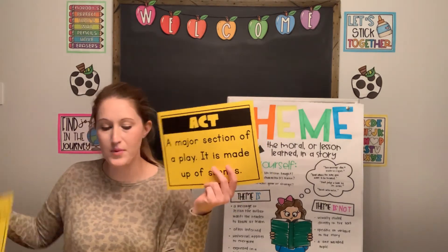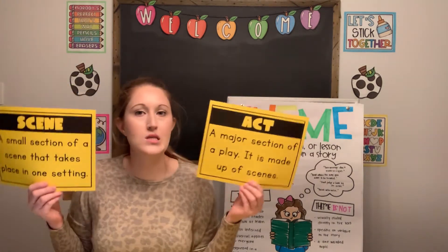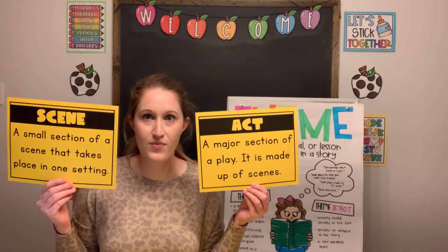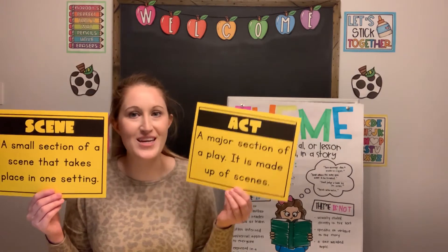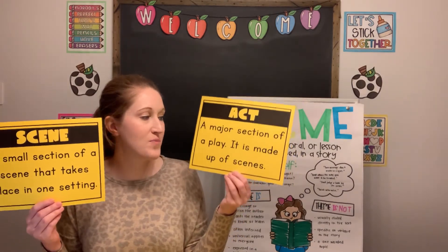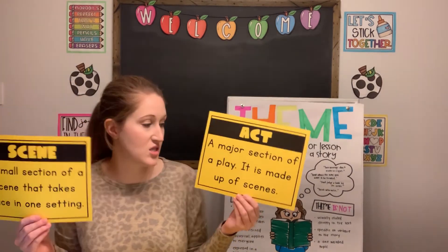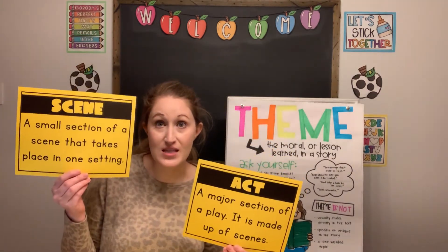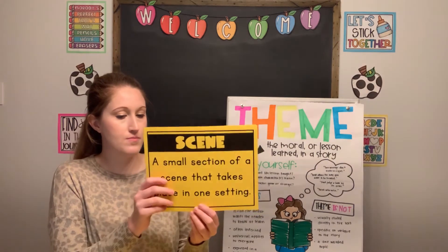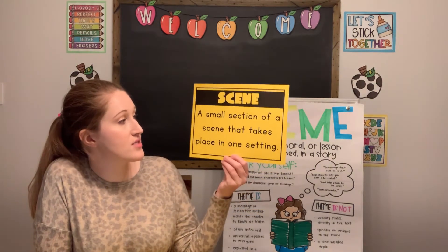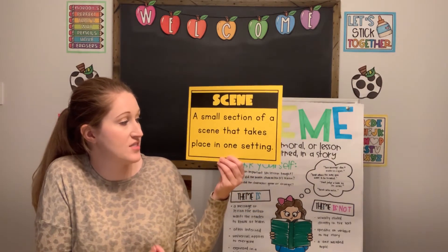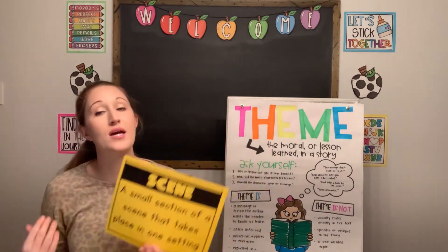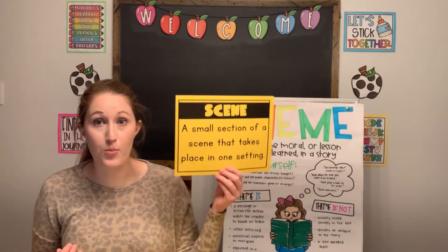Can you tell me which one is bigger — an act or a scene? Which one's a bigger chunk? An act is a bigger chunk. It's one of the major sections of a play, and an act is made up of scenes. Scenes are small sections of an act that take place in one setting. So if we switch to a brand new setting, we're having a brand new scene.